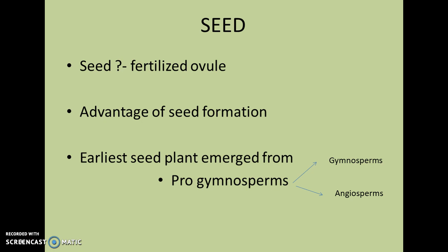The process of germination is coupled with the process of mobilization of the stored reserves. These food reserves are stored in several types of tissues. Now we can see the seed structure and its composition.